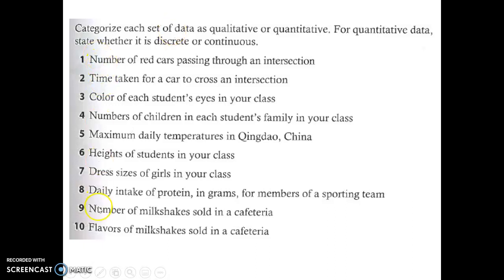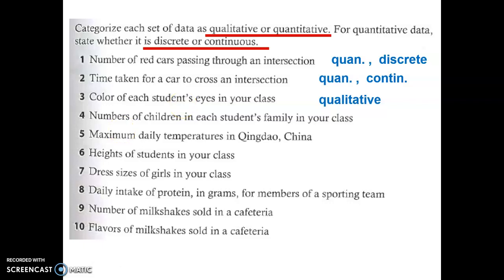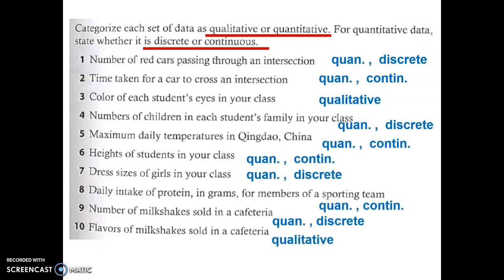I hope you were successful with that. Now let's look at these. Here we have another list of examples of data. I want you to categorize each as qualitative or quantitative. And for the quantitative data, go further. Tell me if it's discrete or continuous. Number one is quantitative and discrete because we're counting the number of cars. We're not measuring. Number two is quantitative and continuous. How about number three? Qualitative, for sure. Color is not a numerical value. Number four: quantitative, discrete. Now finish off the list and check your answer is there.